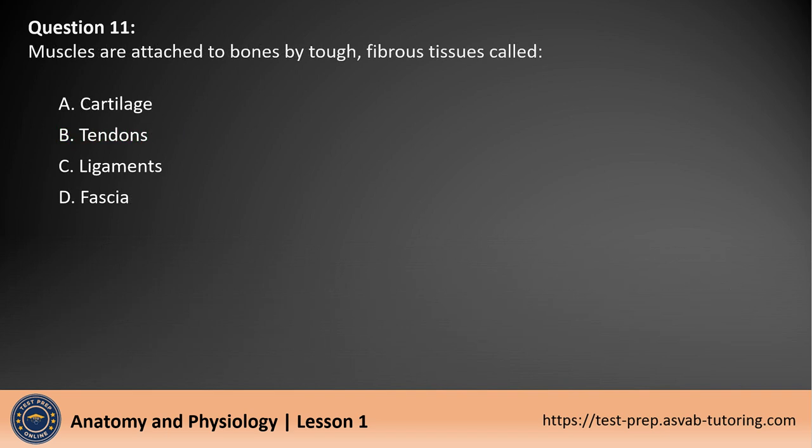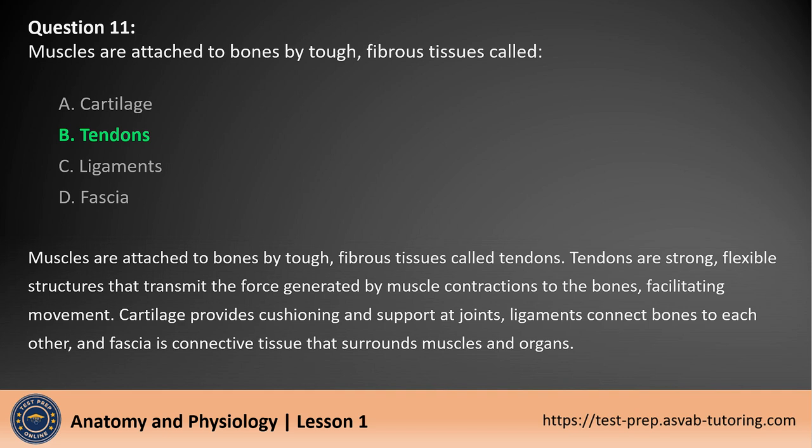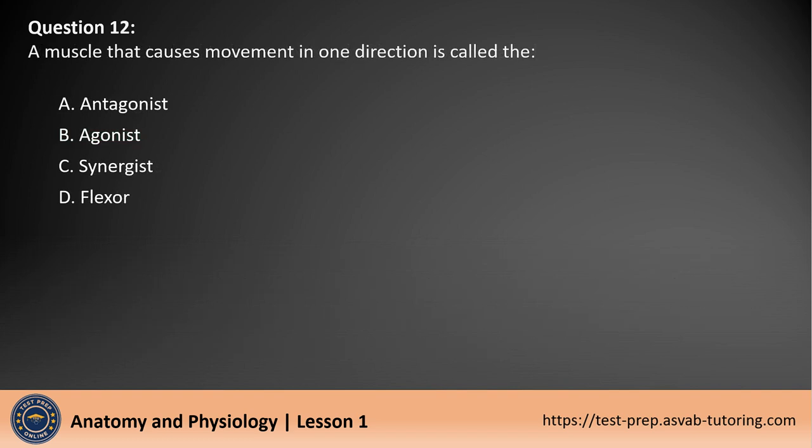Question 11. Muscles are attached to bones by tough, fibrous tissues called: A. Cartilage. B. Tendons. C. Ligaments. D. Fascia. The answer is B. Muscles are attached to bones by tough, fibrous tissues called tendons. Tendons are strong, flexible structures that transmit the force generated by muscle contractions to the bones, facilitating movement. Cartilage provides cushioning and support at joints, ligaments connect bones to each other, and fascia is connective tissue that surrounds muscles and organs.